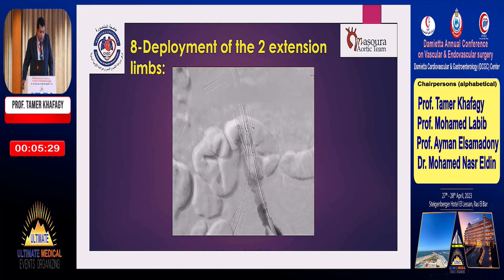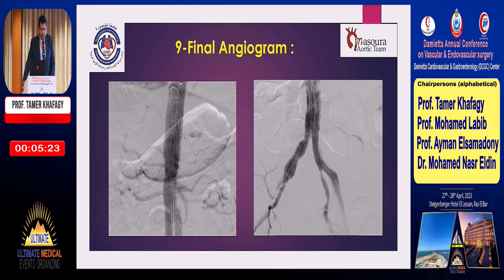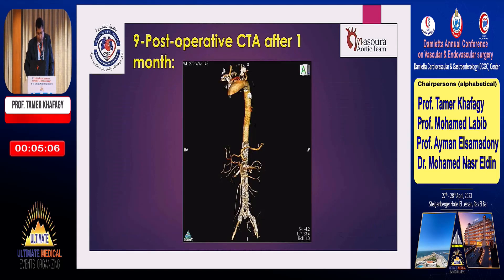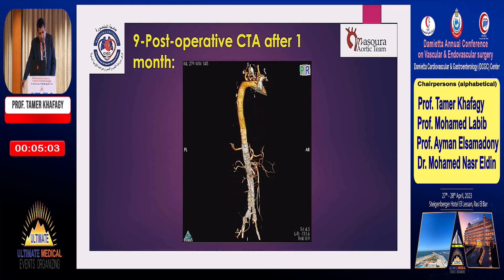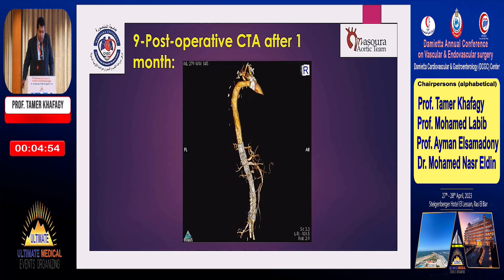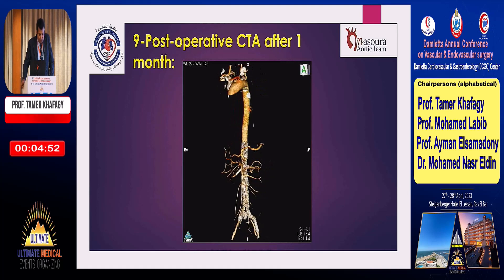We then deploy the two extension limbs as usual. The final angiogram shows no endoleak, all branches are well opacified, there is no leak distally in the iliacs, and each vessel is well opacified. The post-operative CTA at one month confirms the graft in its place with good opacification of all visceral branches.